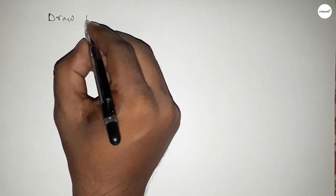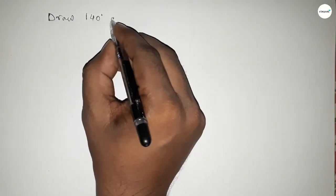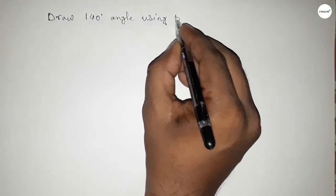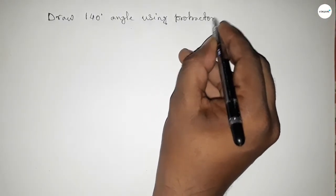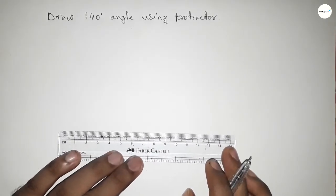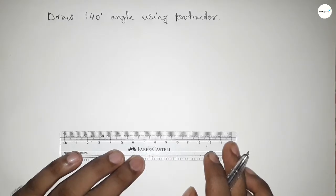Hi everyone, welcome to SI share classes. Today in this video we have to draw a 140-degree angle by using a protractor. So let's start the video. First of all, drawing a line of any length here.